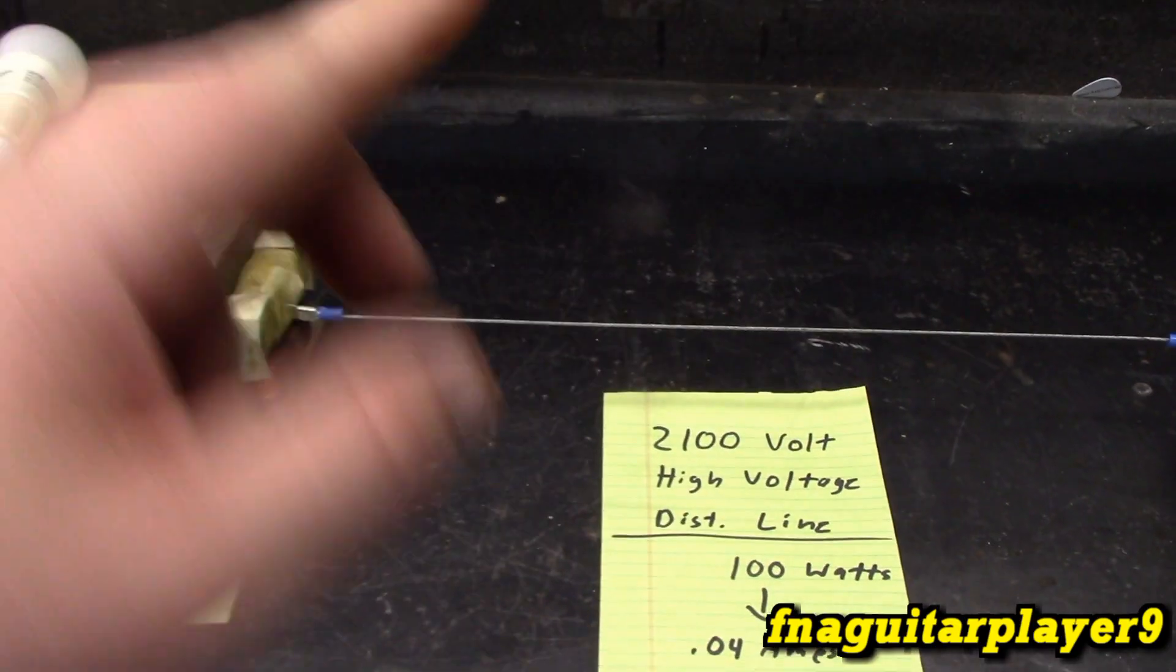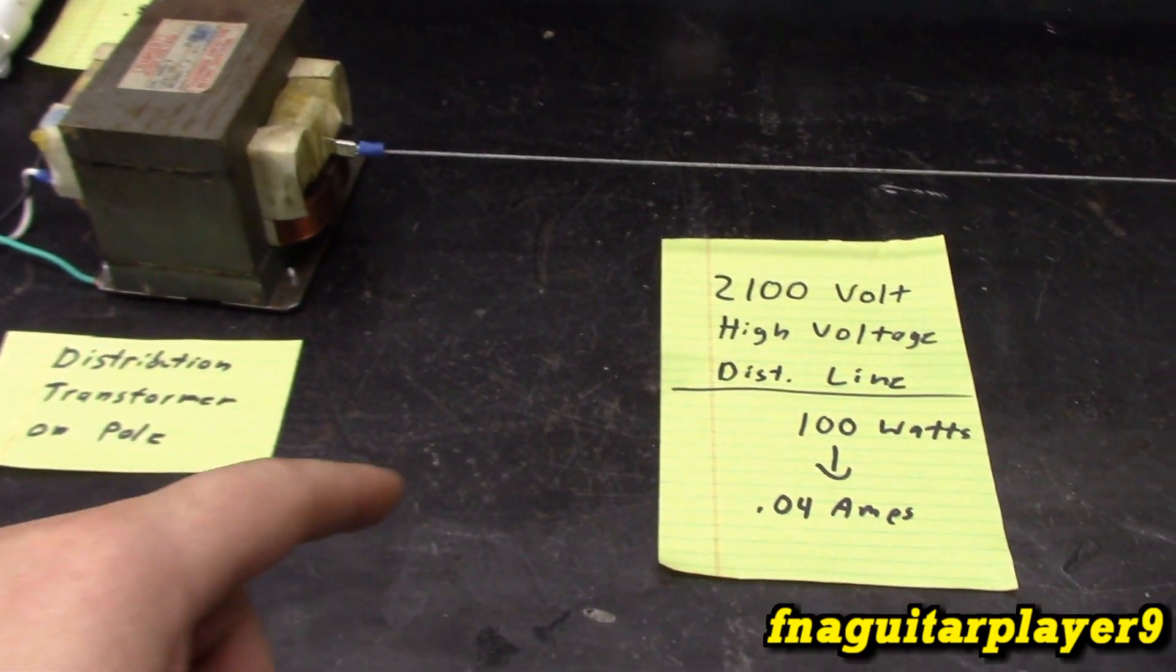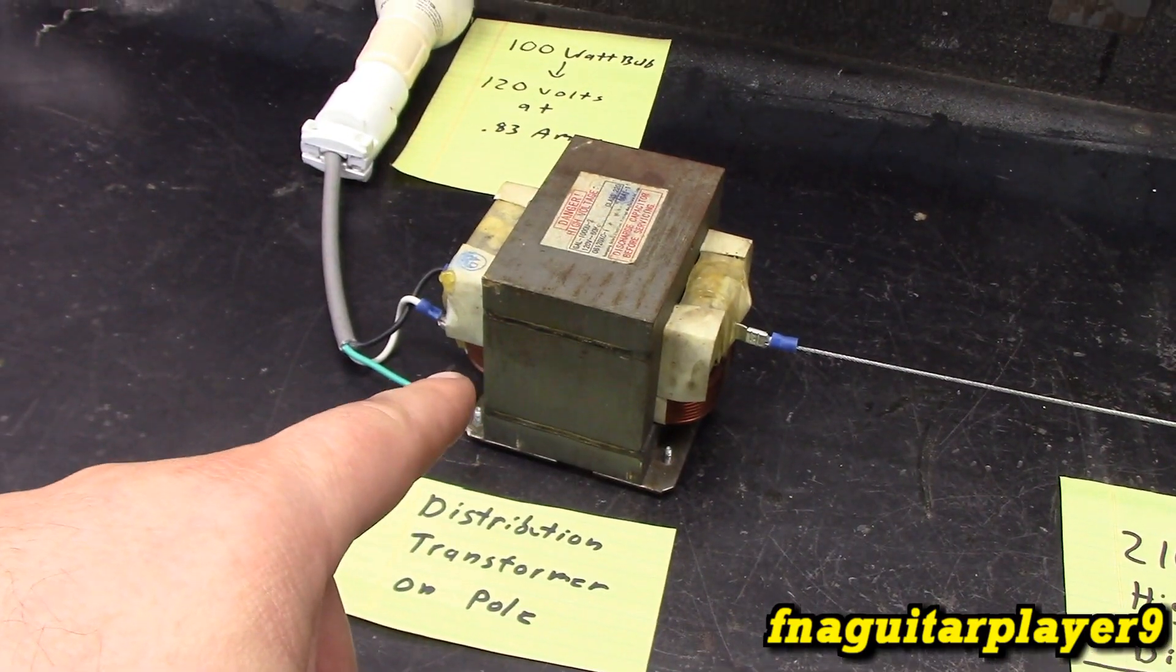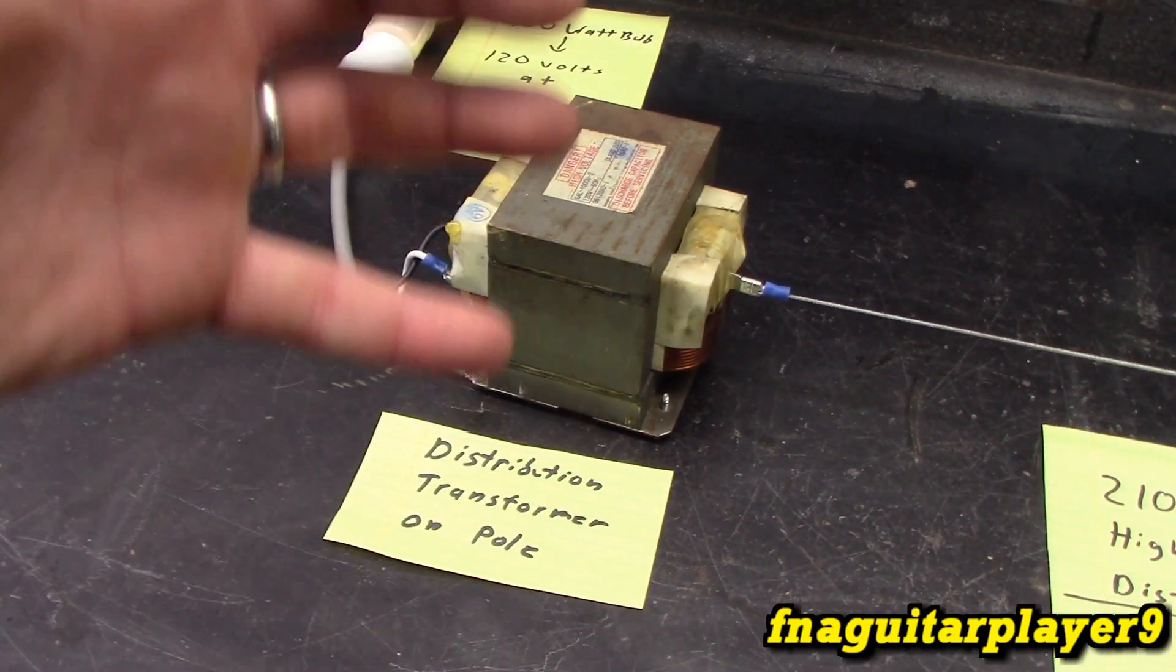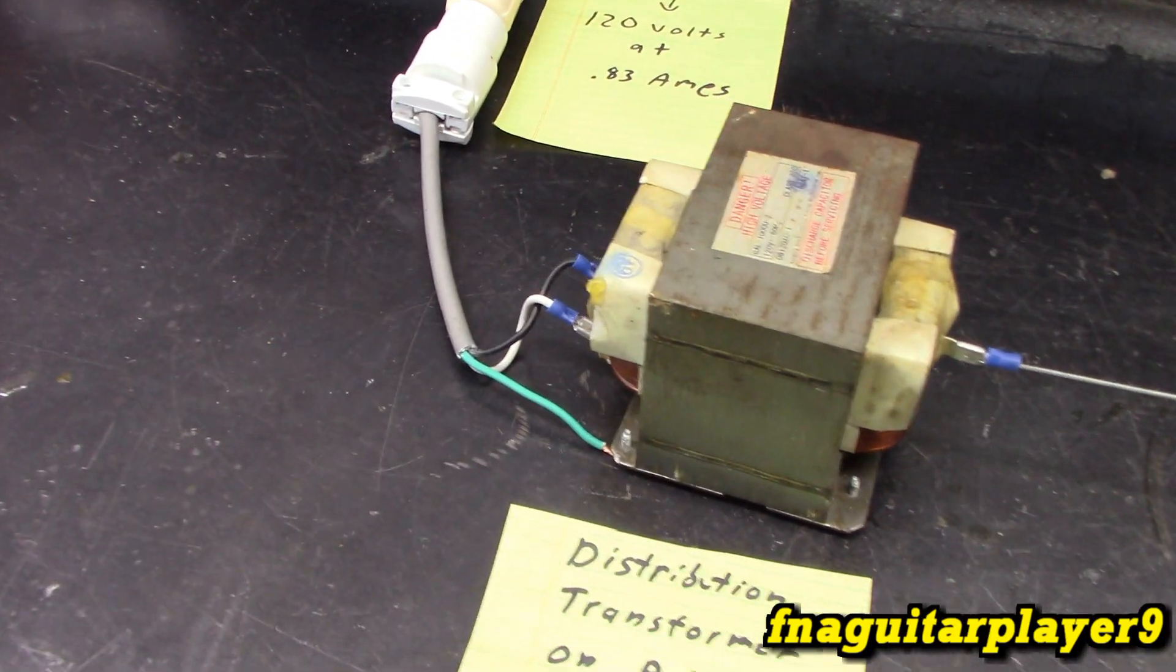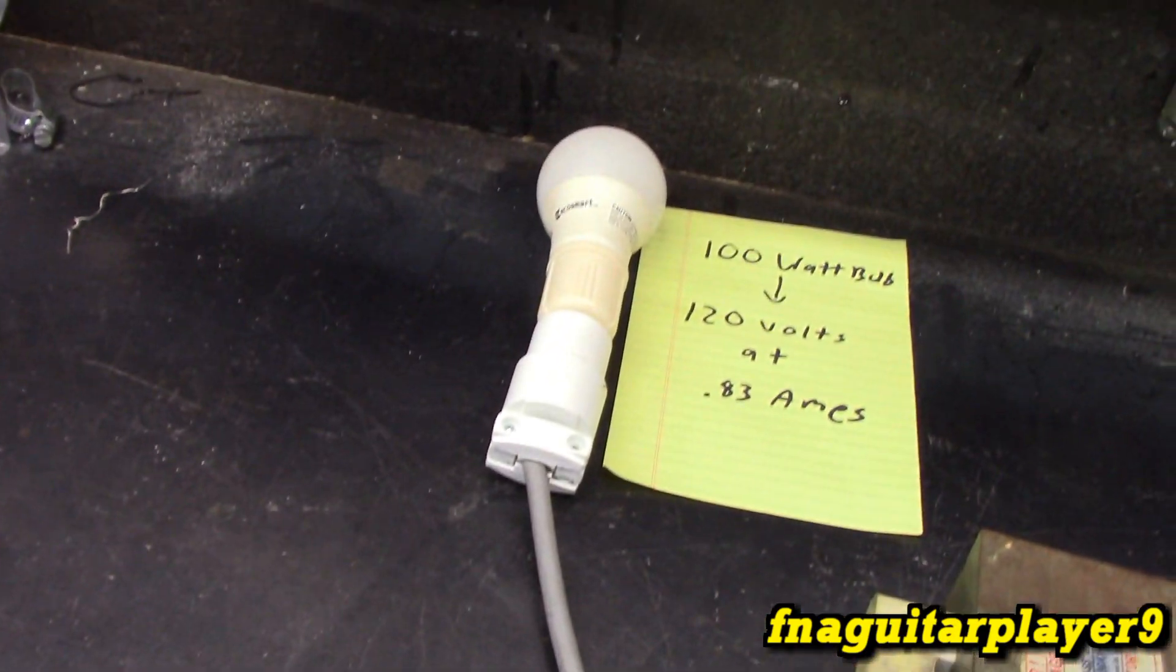This is what you'd see at the top of the telephone poles close to houses. Your high voltage lines are always at the very top of the pole. Then this would come down to the round can looking transformer on the pole by your house. It's hooked directly to your house. This represents the wire going to your house.